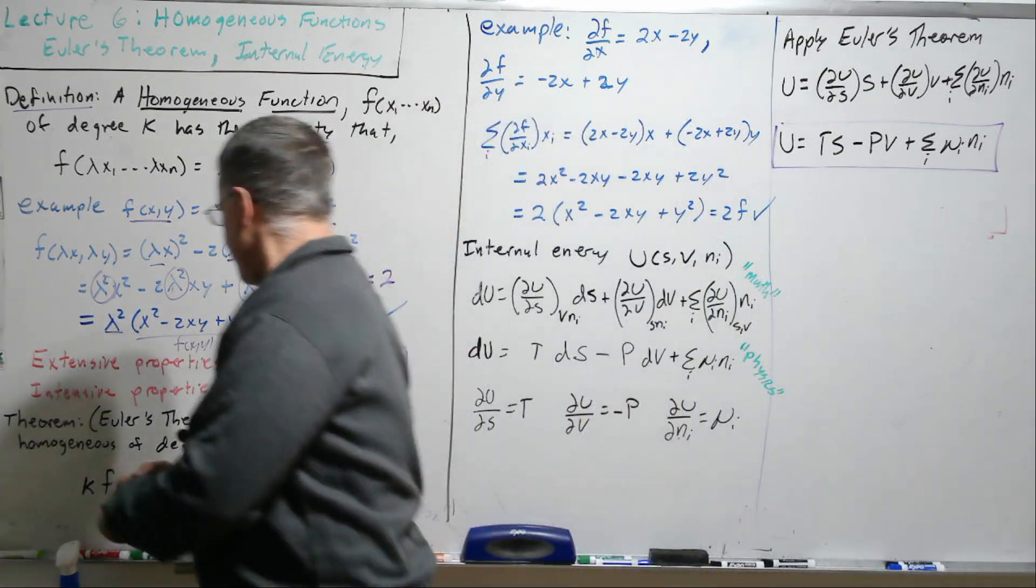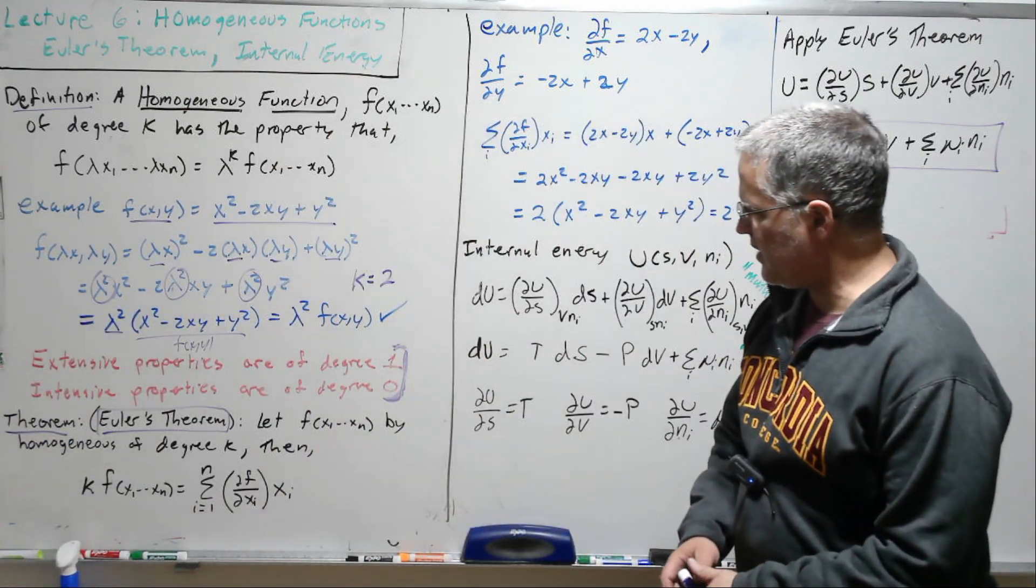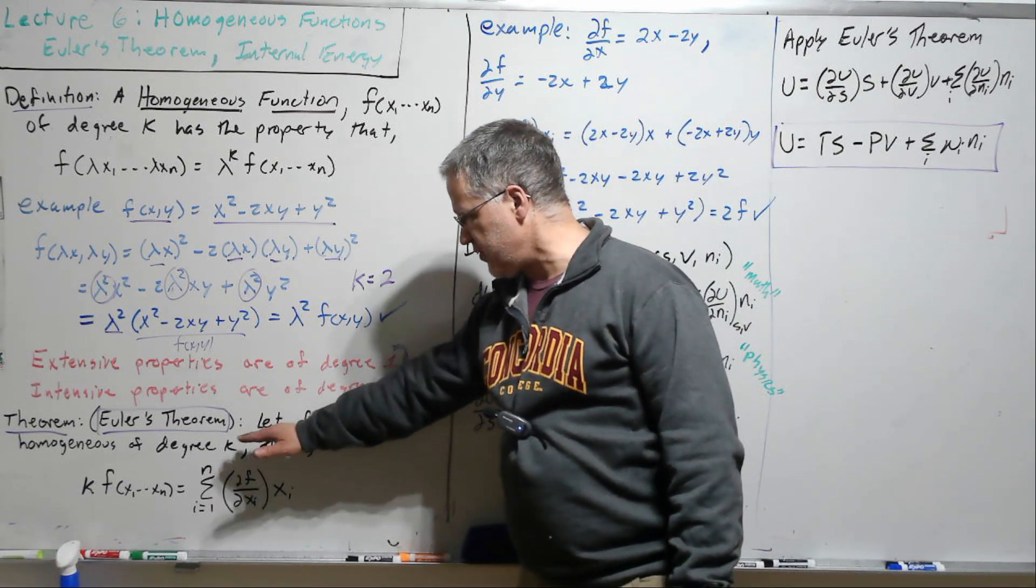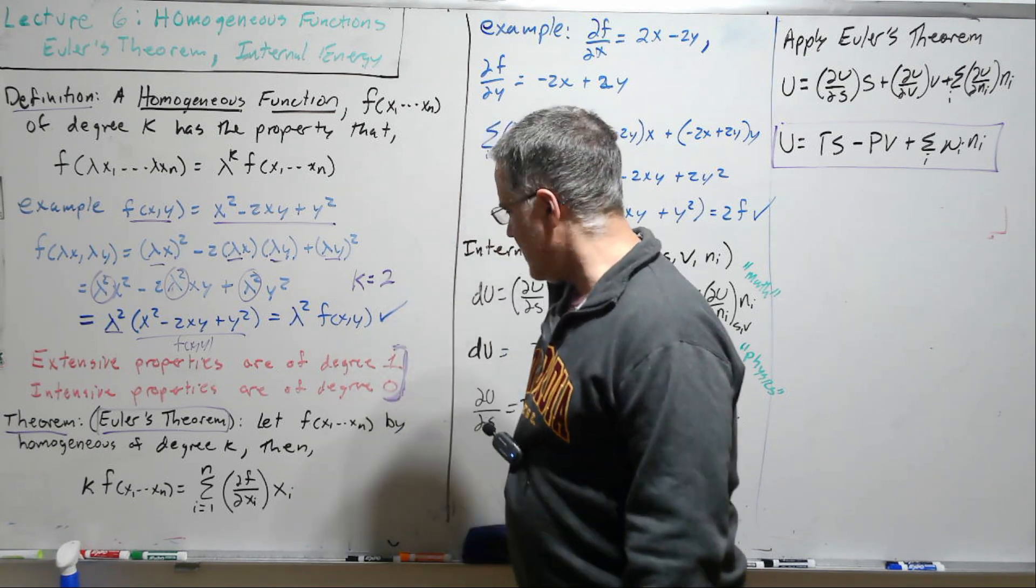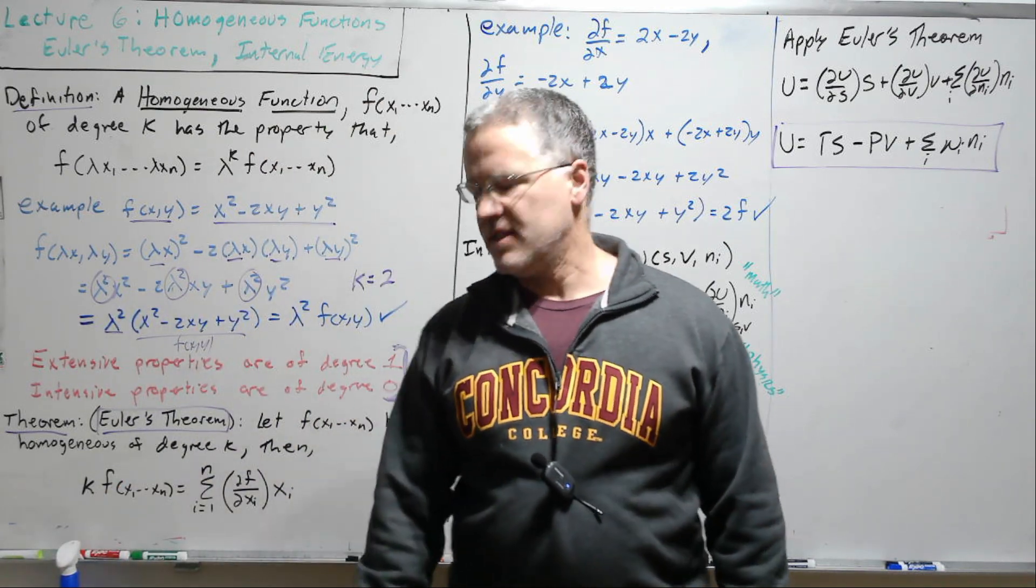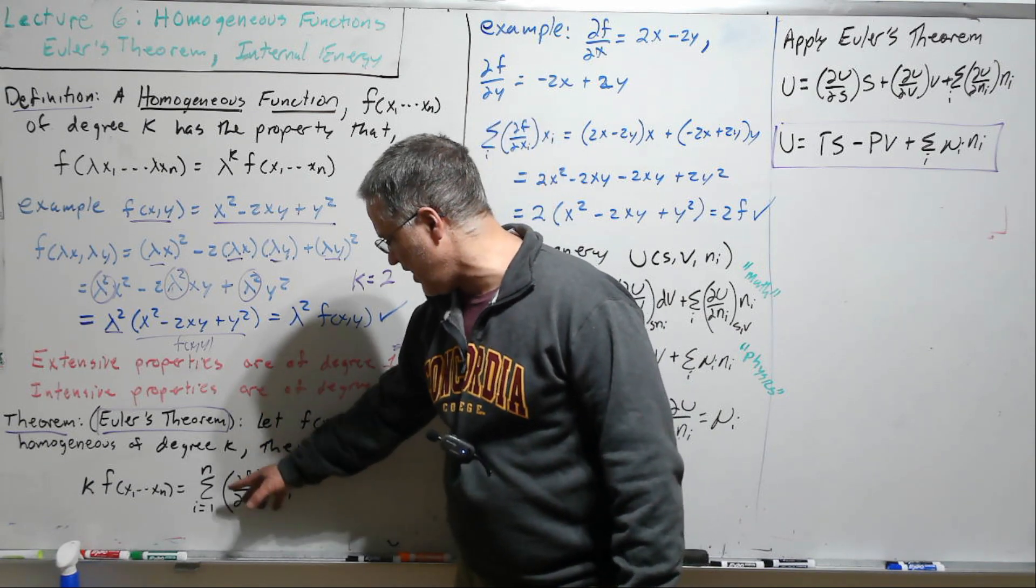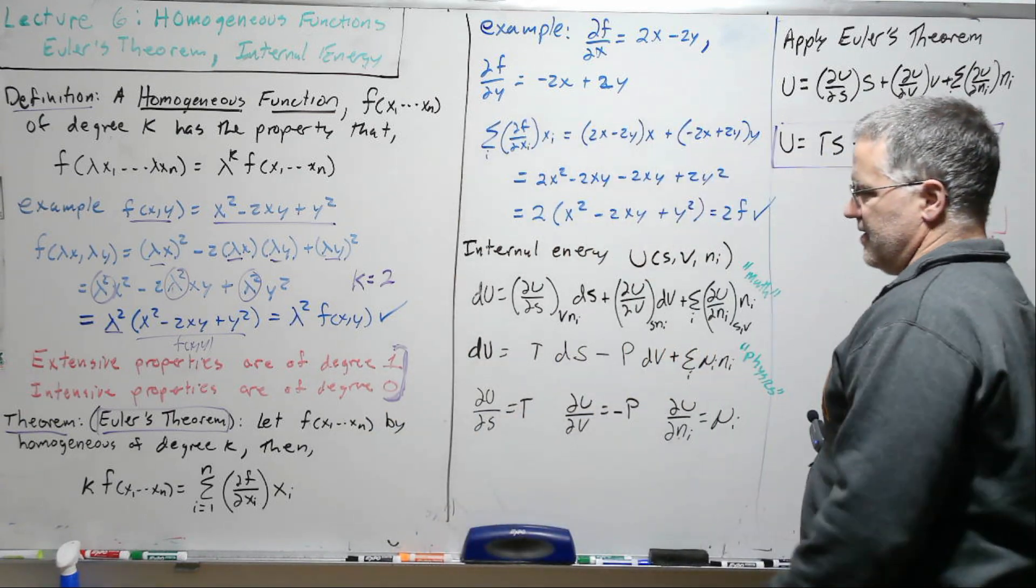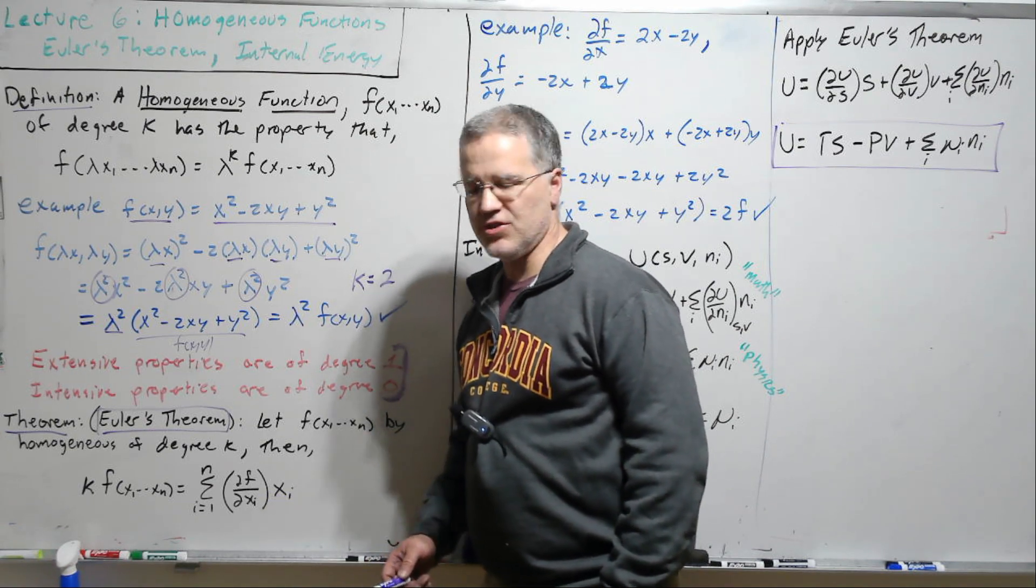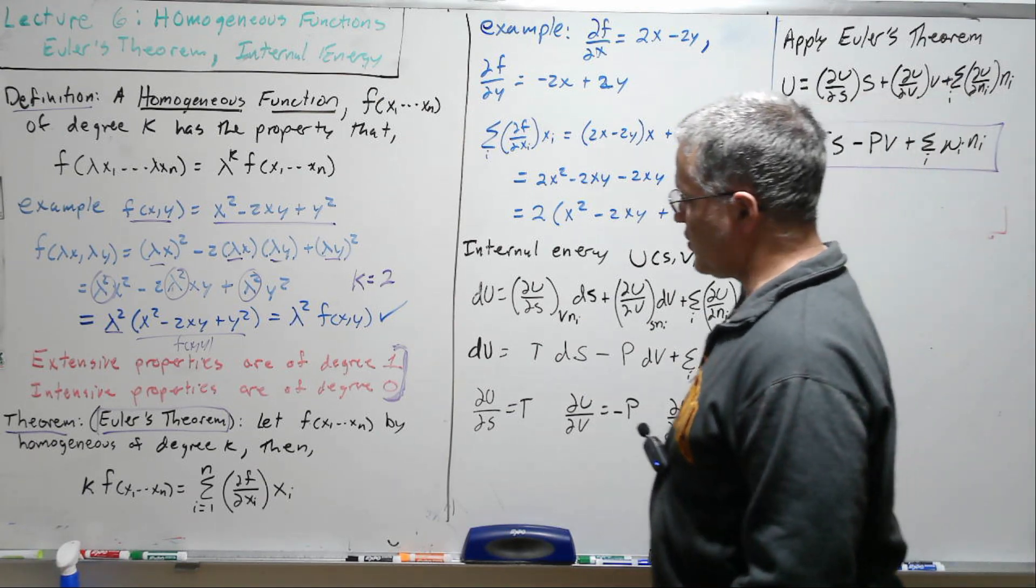Now we're going to state a theorem that we're not going to prove. This is called Euler's theorem. And so we're not going to do the mathematical proof for that. We're just going to take this. If we have a homogeneous function of degree k, then interestingly k times our function is equal to this. This looks like a differential form, but it's not. There's no d's anywhere. So that's very interesting. It's the sum of the partial derivatives times the variable itself, not d variable. So it looks a lot like a differential form, but it's not.